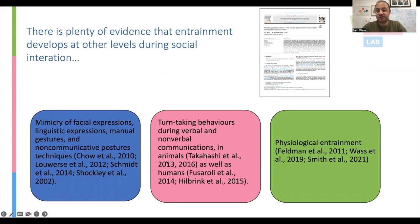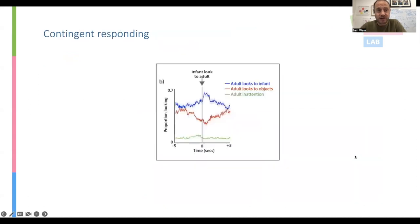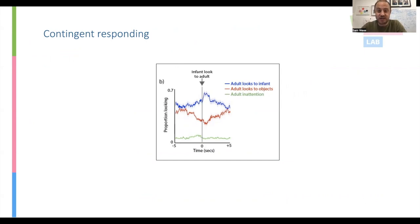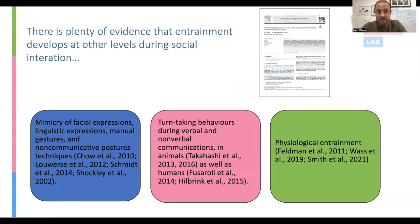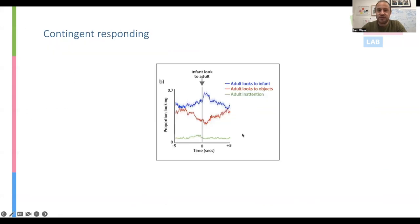Here's one example of data we collected in my lab from a tabletop interaction, time-locked to the moment where the baby looks up to the adult. We can very clearly see that there is an increase in the likelihood of the adult looking to the infant, time-locked to the moment the infant looks to the adult — exactly as you would expect, not rocket science, but it's there in our data as we'd expect. So we know that type of contingent responding exists.